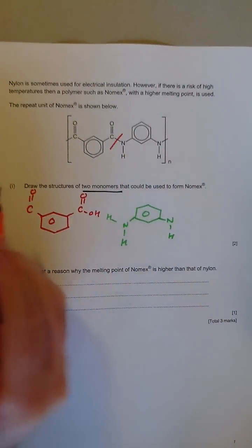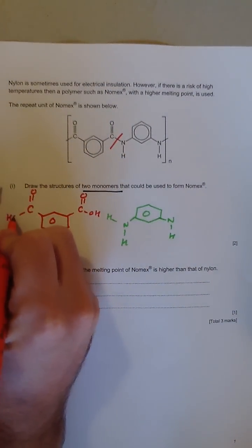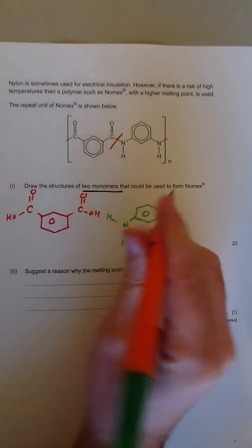So the two monomers are the dicarboxylic acid and the diamine.